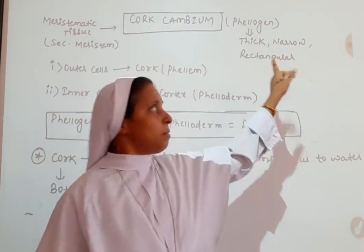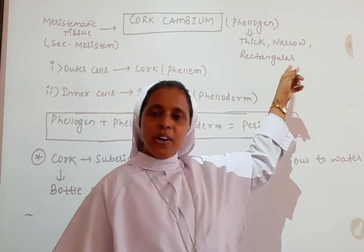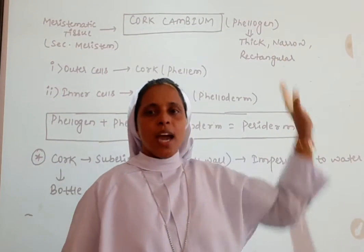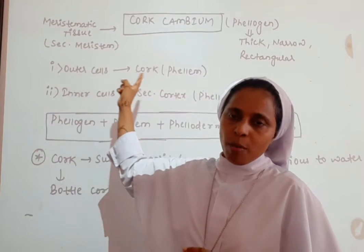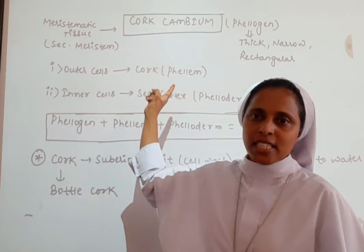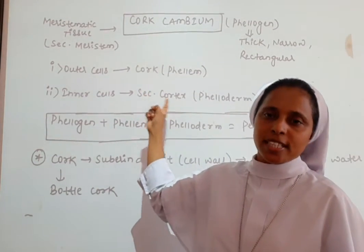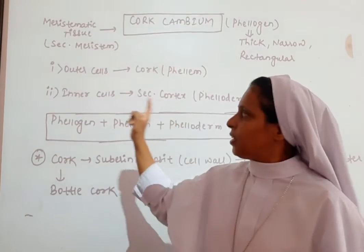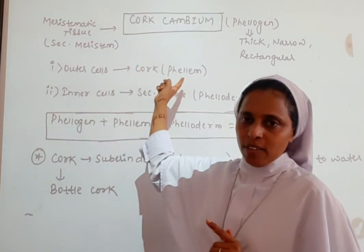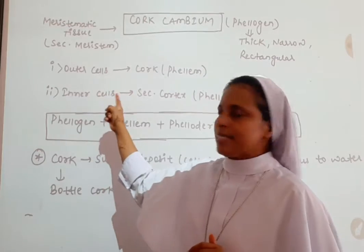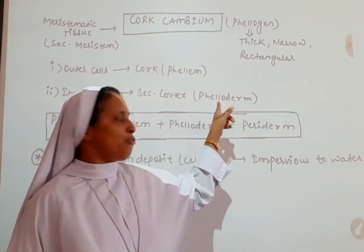Cork cambium is derived from the secondary meristematic tissue, otherwise termed as phellogen. It is thick, narrow, and rectangular in shape. Outer cells of cork cambium form cork, otherwise known as phellem. Inner cells form secondary cortex, otherwise termed as phelloderm.